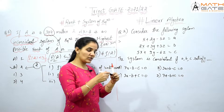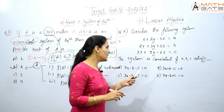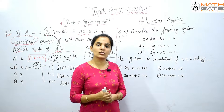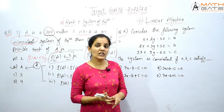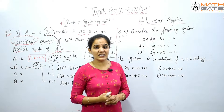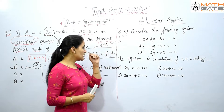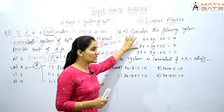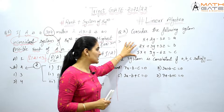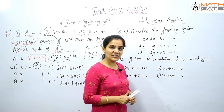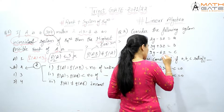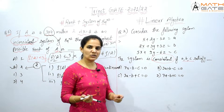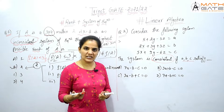The next question is a good one. Consider the following system: x + 2y − 3z = a, 2x + 3y + 3z = b, and 5x + 9y − 6z = c. The system is consistent if a, b, c satisfy what condition? We need to find which condition on a, b, c makes the system consistent.